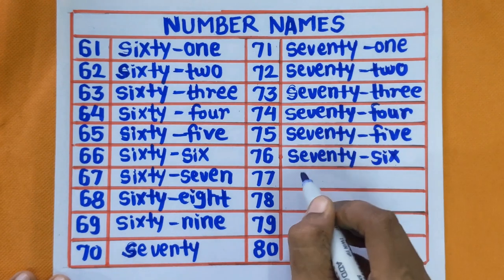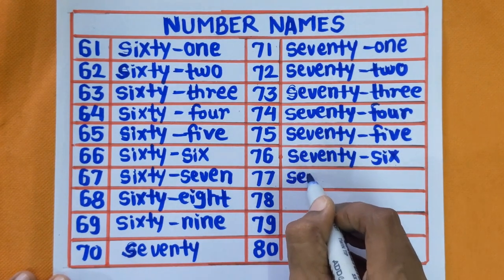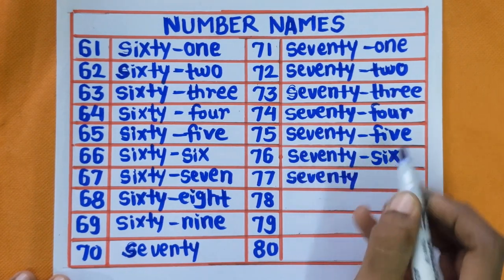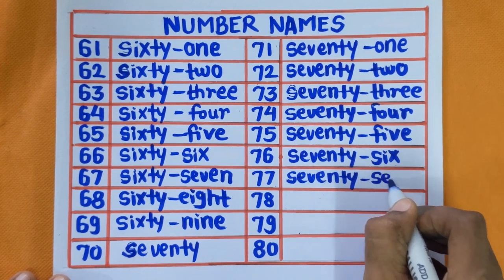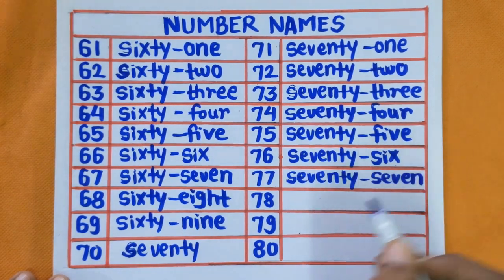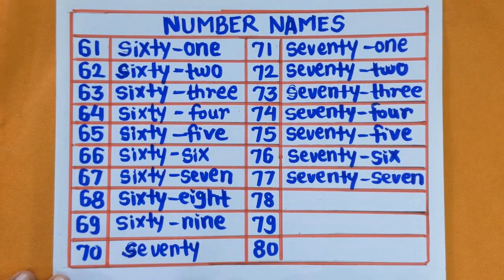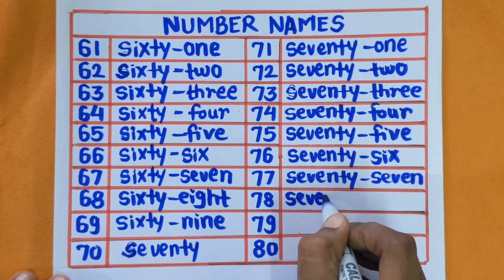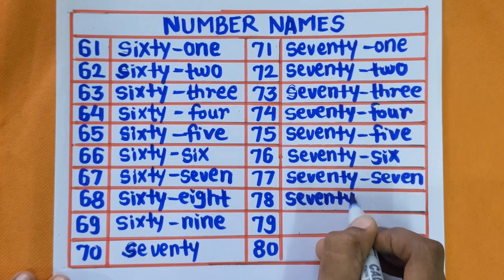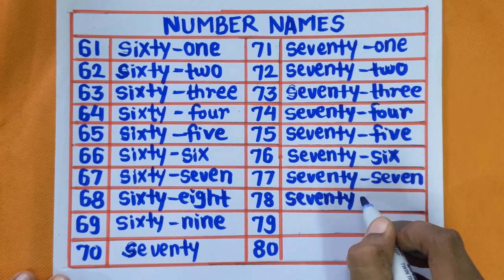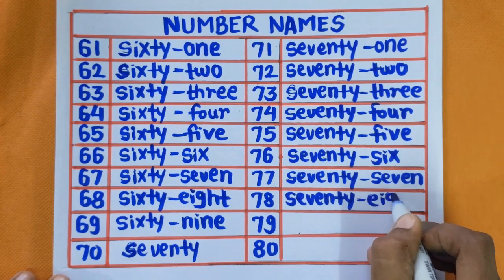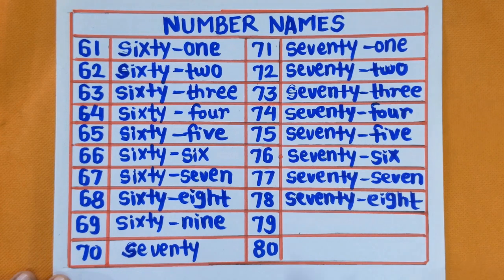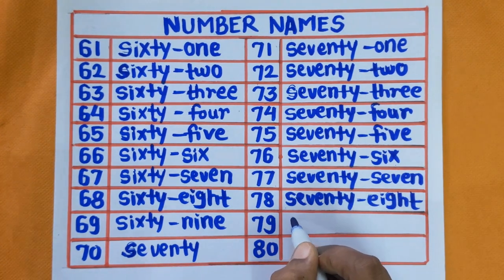Next is 77 — S-E-V-E-N-T-Y-S-E-V-E-N. 77. Next is 78 — S-E-V-E-N-T-Y-E-I-G-H-T. 78. Next is 79.